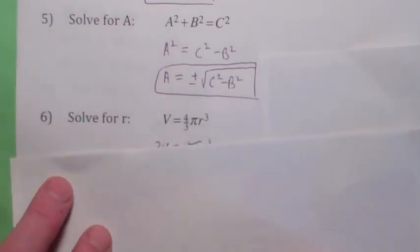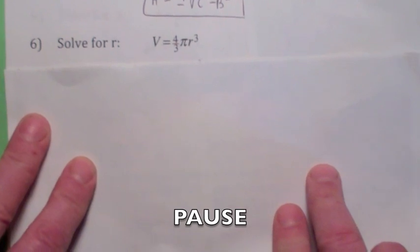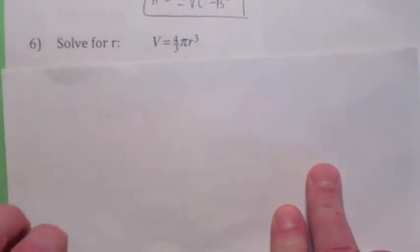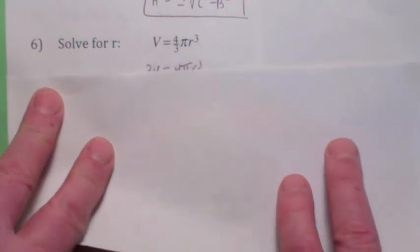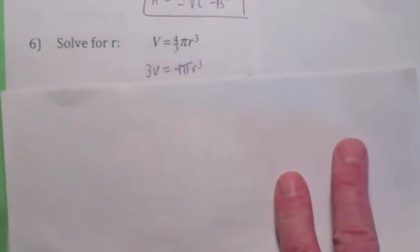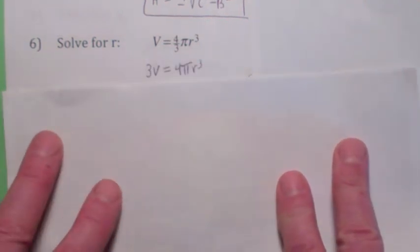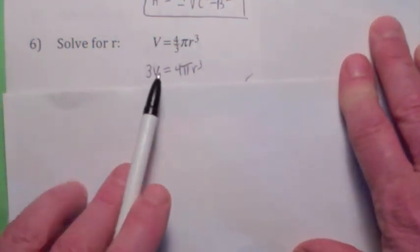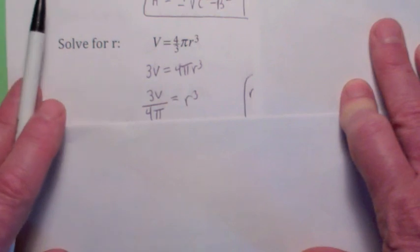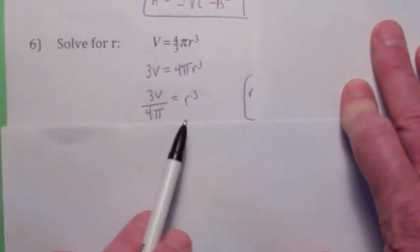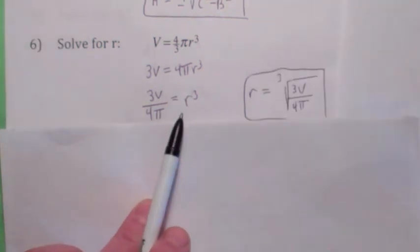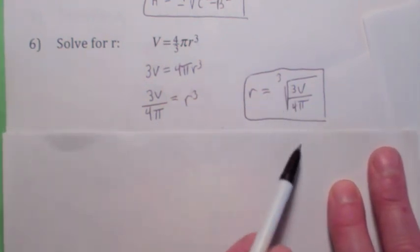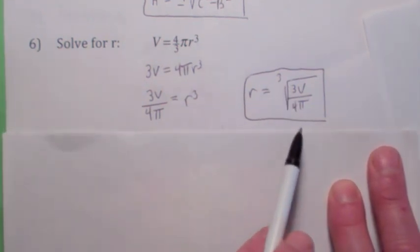Let's try another one. Solve this for r. Again, you have an equation that has fractions. Let's clear the fractions. Let's multiply both sides by three. Now, we're trying to solve for r, right? So then let's divide by four pi first. And then to get r by itself, we'd take the cube root of both sides. You could continue this. You could rationalize the denominator. I don't feel like doing that right now, but that's good enough for now.